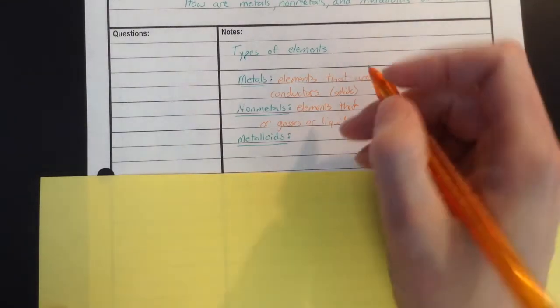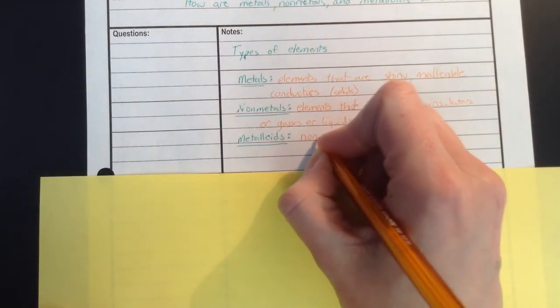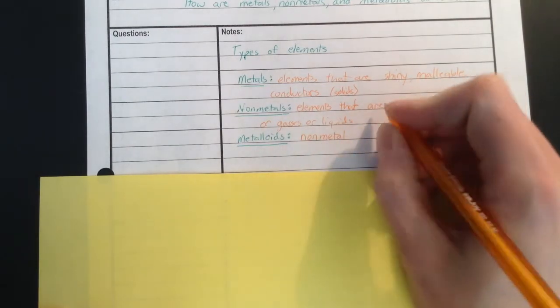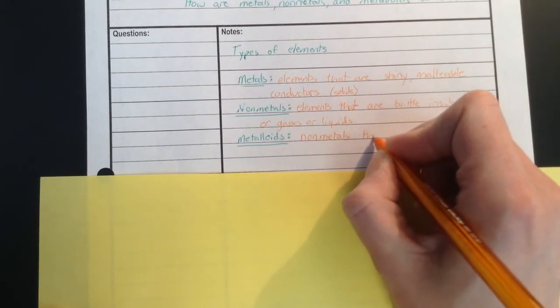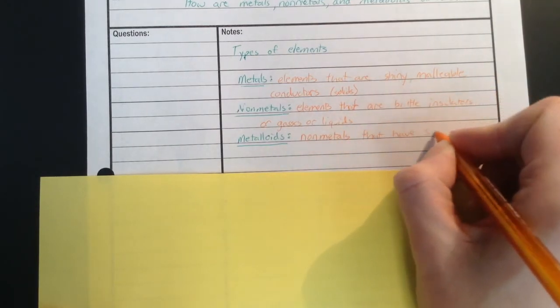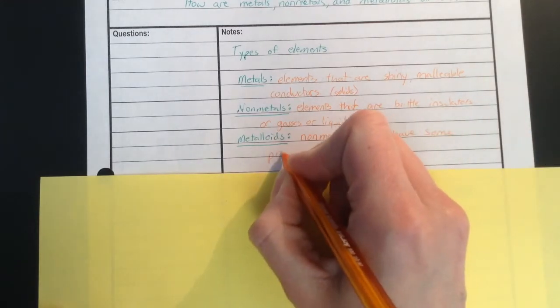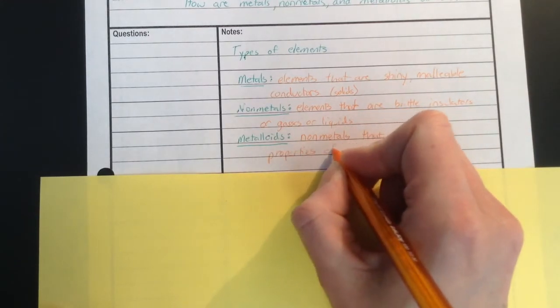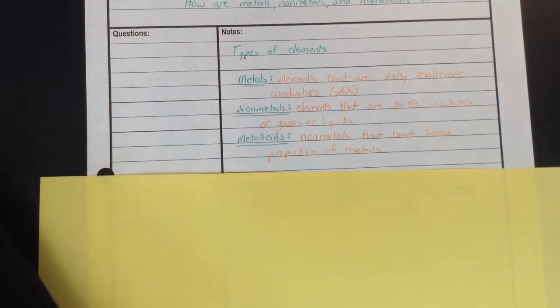Metalloids are kind of interesting. They're somewhere in between a metal and a nonmetal. In fact, they're defined as a nonmetal. They're nonmetals that have some properties of metals.